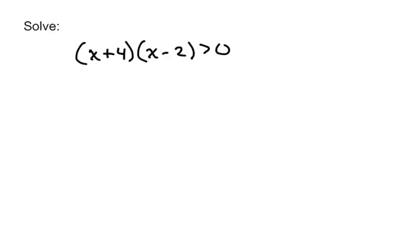Let's take a look at some quadratic inequalities. If we want to solve a quadratic inequality like this, the only way we're going to be able to do it is with what we call a sign chart. A sign chart is really just a number line, and on this number line we're going to identify the critical points of our expression. In our inequality, the expression is x plus 4 times x minus 2, and the two critical values are going to be negative 4 and 2.